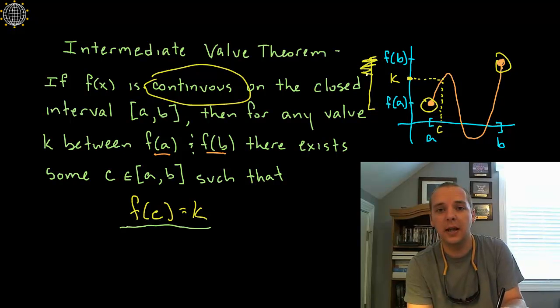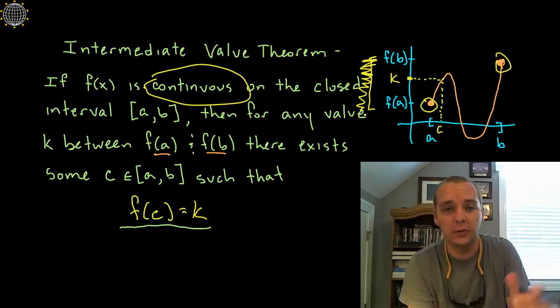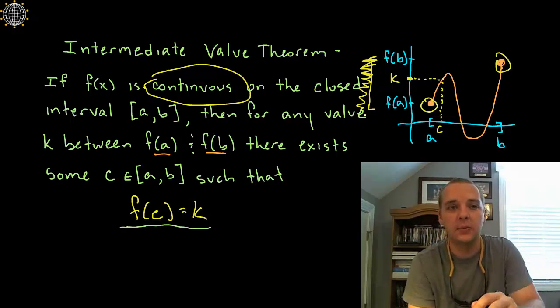that means you must be able to get every y value in between somewhere, right? So that is what the intermediate value theorem is saying. So hopefully that makes it make a little bit more sense.